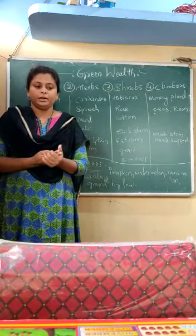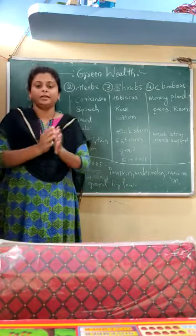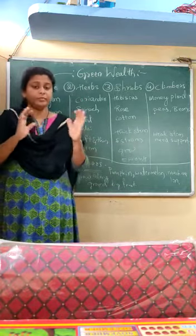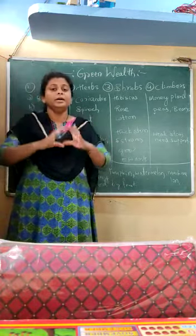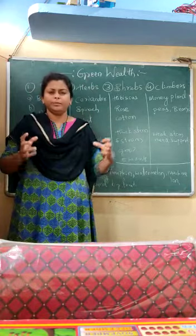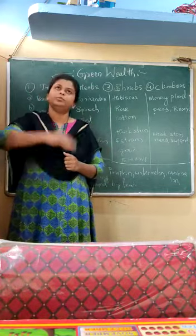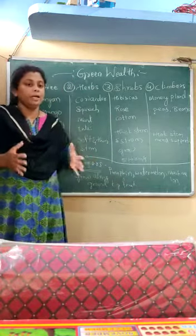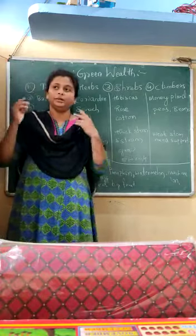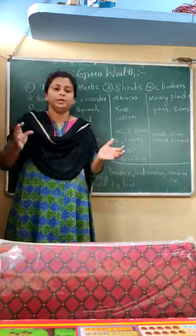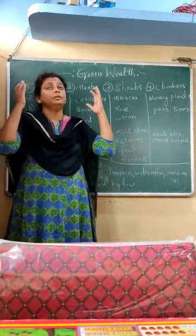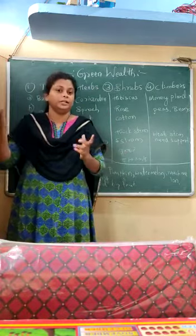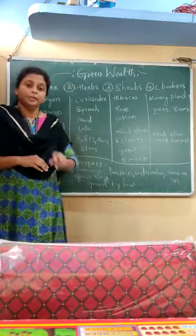The first type is trees. A tree has a very thick trunk, a very strong and thick stem, and it can stand alone - even in wind, even in rain, even in any climate. That big tree also gives us shadow, benefiting other animals including human beings.